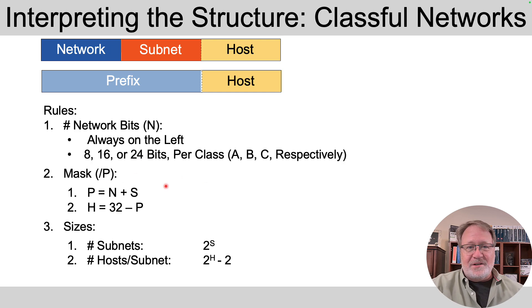Then if you're looking at the mask in prefix notation, like it's slash P, you know, slash 18, slash 21, whatever, the sum of the network and subnet bits equals that P. So if you know there's 16 network bits, and you've got a slash 21 mask, then you know there's 5 subnet bits, because 16 and 5 add up to 21, for instance.